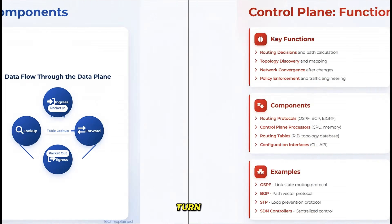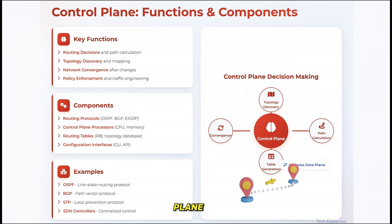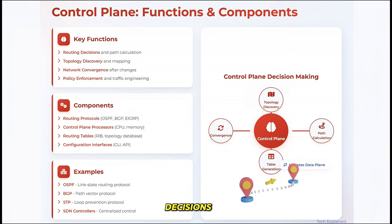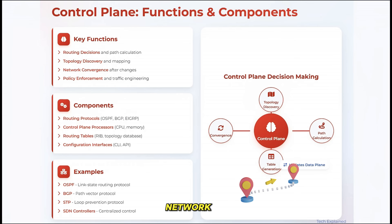Now let's turn our attention to the control plane — the brains of the network. While the data plane handles the physical movement of data, the control plane makes all the important decisions about how that data should move. The control plane is responsible for routing decisions — figuring out the best paths through the network. It also handles topology discovery, learning about the network layout and what devices are connected where.